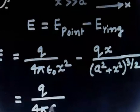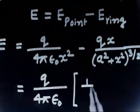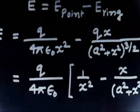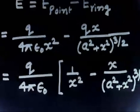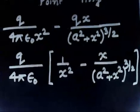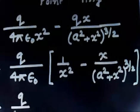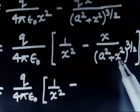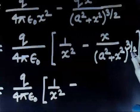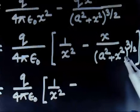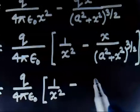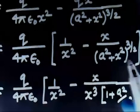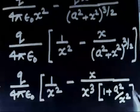So the total field is Q over 4π ε₀, multiplied by the quantity [1/X² minus X/(A² + X²)^(3/2)]. Now we apply the approximation since X is much greater than A. Taking X² common from the second term: X over X³ times (1 + A²/X²)^(3/2). So the expression becomes Q over 4π ε₀ times [1/X² minus (1/X²)(1 + A²/X²)^(−3/2)].